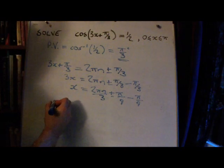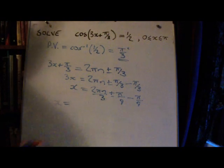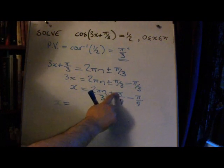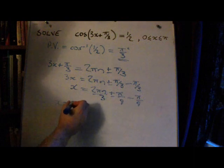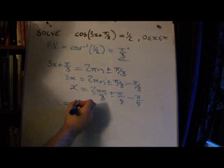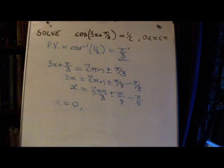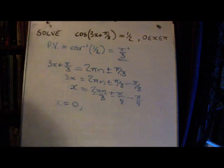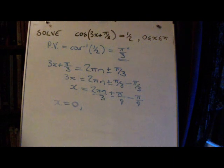So running through values of n, if we use n equals 0, that will give us 0 plus π over 9 minus π over 9, which will be 0. So 0 radians as a solution. And we'll have minus π over 9 minus π over 9, and that's outside the interval, so we can ignore that one.